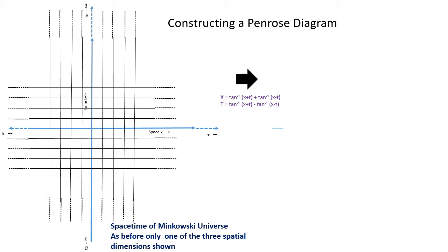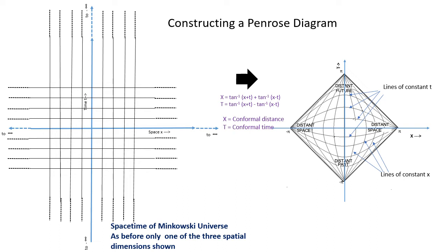To get the Penrose diagram for the Minkowski universe, we apply the following coordinate transformations. Conformal distance, which we'll call capital X, is given by inverse tangent (x + t) plus inverse tangent (x - t). This scrunches up the range of coordinates so that x and t run between plus and minus pi. We have (0, infinity) maps to (0, pi), (infinity, 0) maps to (pi, 0), (0, -infinity) maps to (0, -pi), and (-infinity, 0) maps to (-pi, 0).